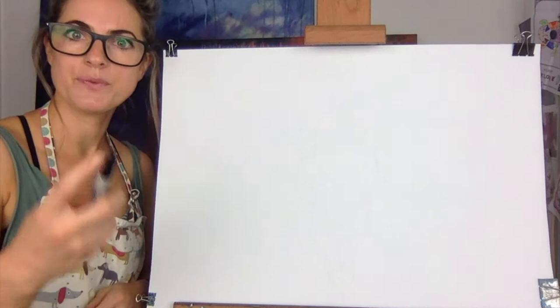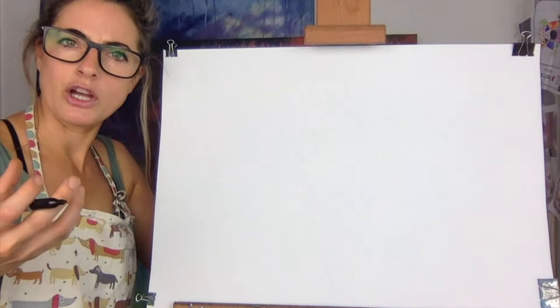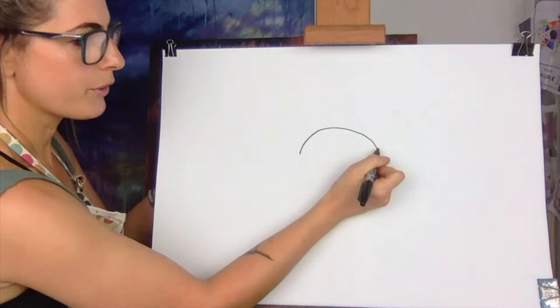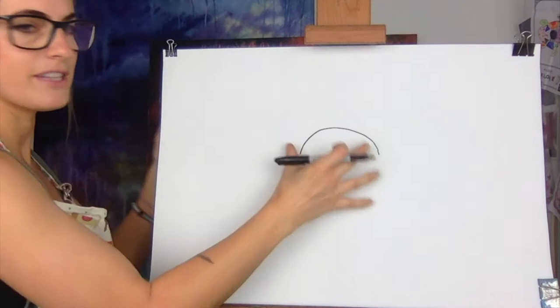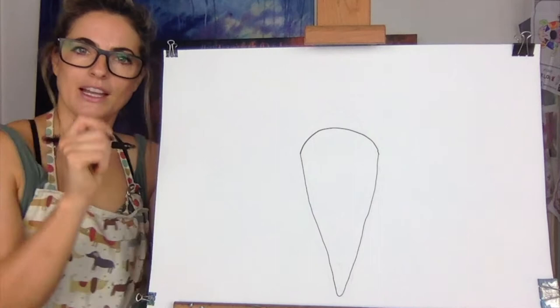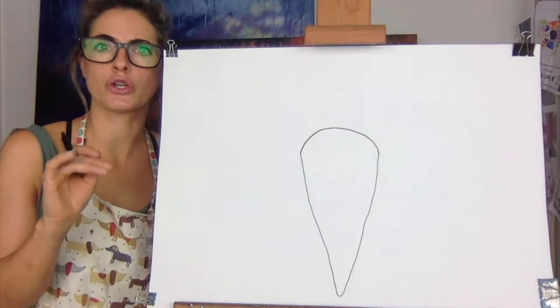First you want to think about where the skull is. It's going to be like a buffalo skull, so we're going to have big horns there and there. So the first thing is in the middle — what we're going to do is draw a rainbow shape, kind of in the middle of the paper, not too high, not too far away. Then you're just going to go a little bit like a carrot. Just draw a carrot shape.